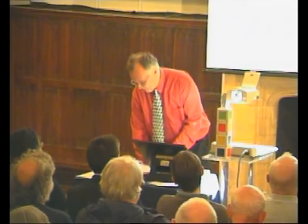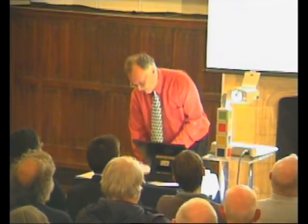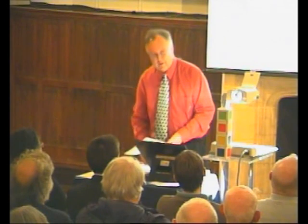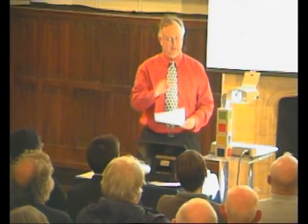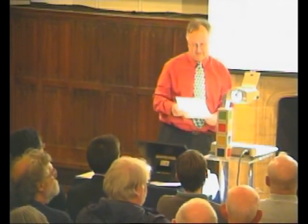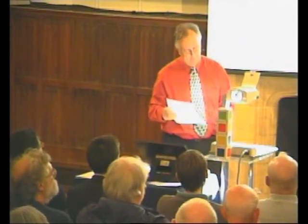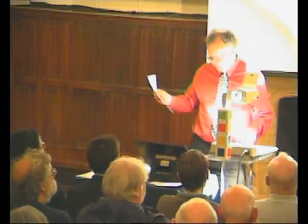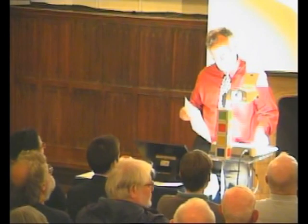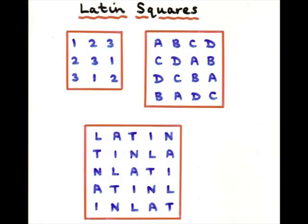The next thing I want to talk about, which is related to this, is Latin squares. I'm a bit nervous because we have one of the world experts on Latin squares in the audience. But very briefly, a Latin square is an arrangement of numbers or symbols of various kinds so that you get each symbol occurring exactly once in each row and in each column.